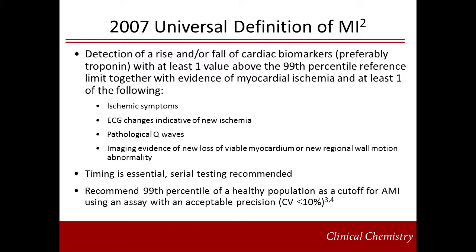In 2007, a universal definition of MI was established to improve the accuracy of myocardial infarction diagnosis. Updates to this definition maintain cardiac troponin as the preferred biomarker of myocardial necrosis. It was recognized that more sensitive troponin assays were detecting other etiologies of both acute and chronic troponin elevations, and therefore additional emphasis was placed on observing a rise and/or fall of cardiac troponin above the 99th percentile. At least one of those troponin concentrations should be above the 99th percentile, and there also needs to be evidence of myocardial ischemia — being symptoms, ECG changes, pathological Q waves, or imaging evidence. The timing of samples remains critical, and serial testing is recommended for interpretation.